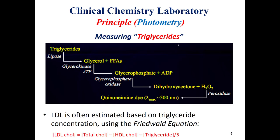The second example is triglycerides. We add reagents to reach a final product which will be hydrogen peroxide, and we measure this at a specific wavelength of 500 nanometers. Another point to mention: low density lipoprotein (LDL) is not measured directly. We measure total cholesterol, high density lipoprotein (HDL) cholesterol, and triglycerides. Then we use the Friedewald formula to calculate the concentration for LDL.